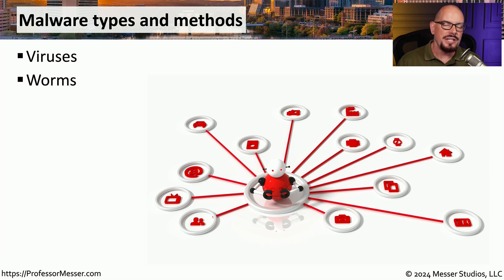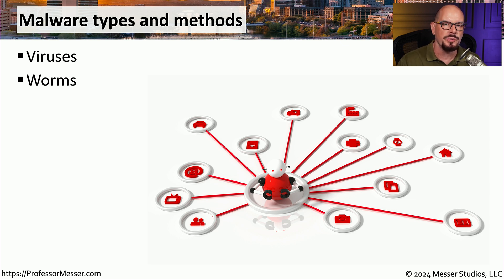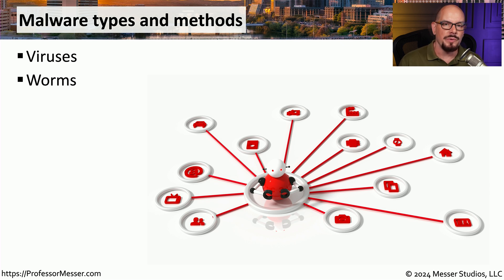This is different than malware that's delivered as a worm. A worm is malware that's able to replicate itself from one computer to another, but it's able to do it without any type of human intervention. For that reason, worms are considered to be much more dangerous than a virus.